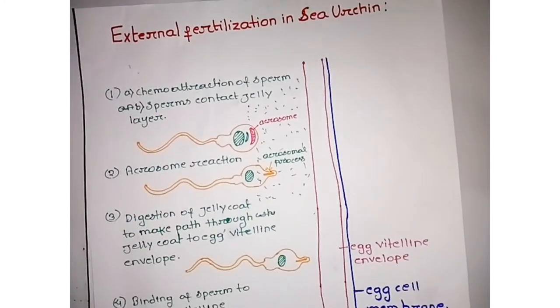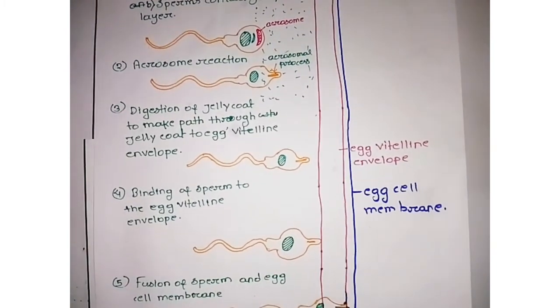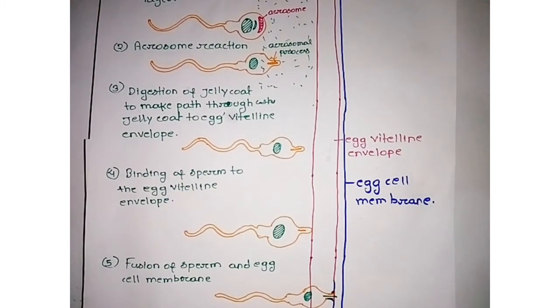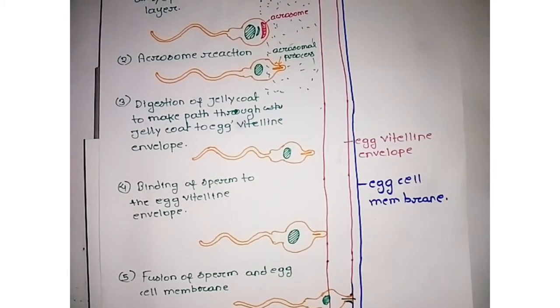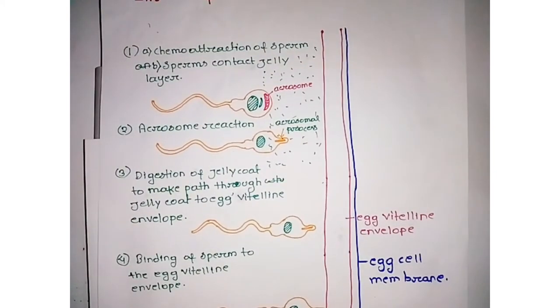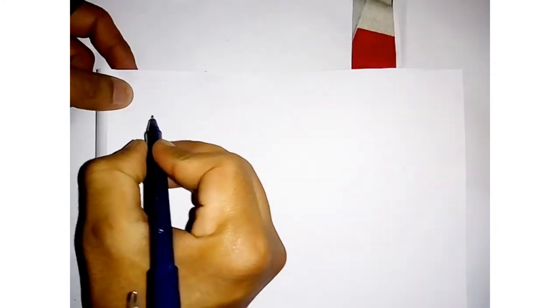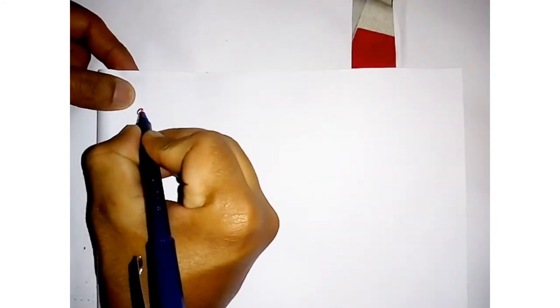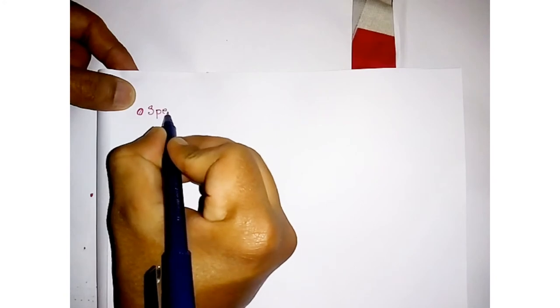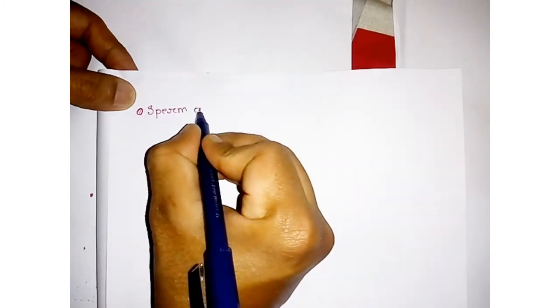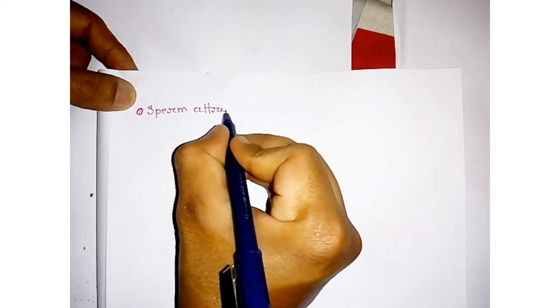These are five steps that are involved in external fertilization in sea urchin, and we describe each step in detailed manner. The first step we discuss is chemoattraction, or you can say sperm attraction - sea urchin sperm attraction.